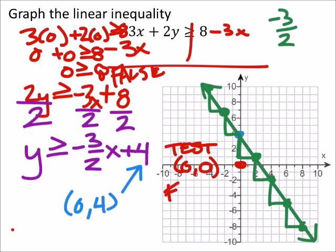So I know that my test point is a false statement. And therefore, I really should shade the other side of the line.